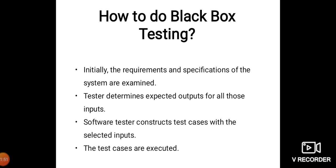To perform black box testing, initially the requirements and specifications of the system are examined. The tester chooses valid inputs, like positive test scenarios, to check whether the system processes them correctly. Also, some invalid inputs, like negative test scenarios, are chosen to verify that the system is able to detect them. The testers determine expected output from all those inputs, construct the test cases, execute them, and then compare the actual output with the expected output.